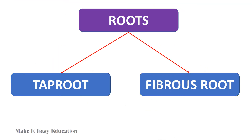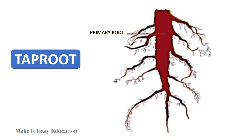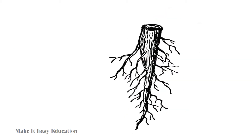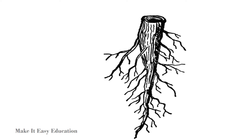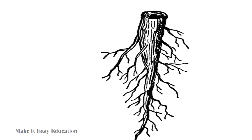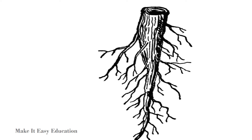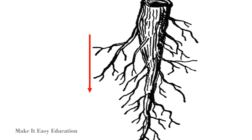The two main types of roots are taproot and fibrous root. A taproot is a large, central and dominant root from which other roots sprout laterally. A taproot is straight and very thick, tapering in shape and grows directly downward.